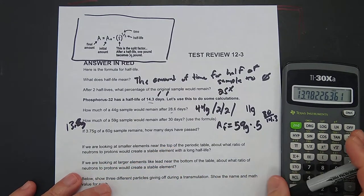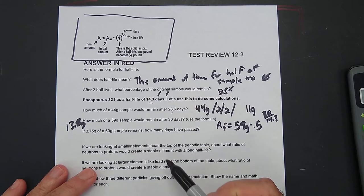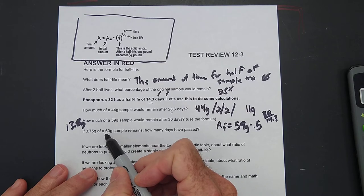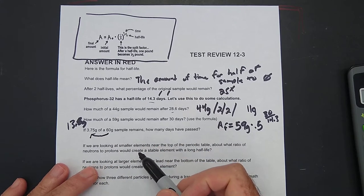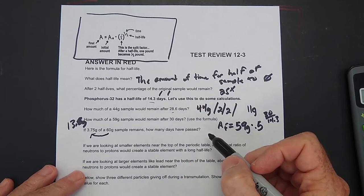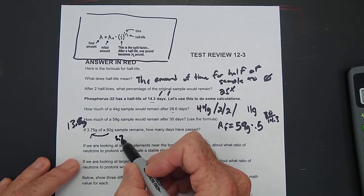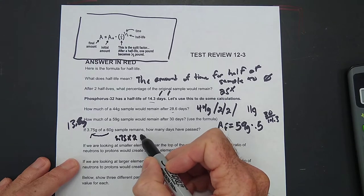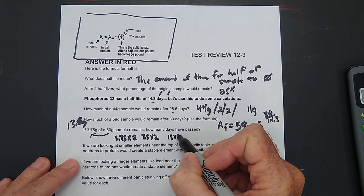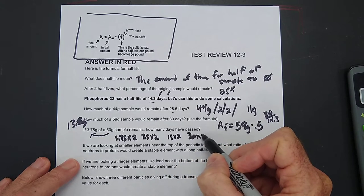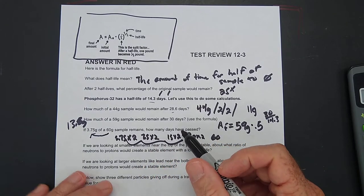If 3.75 grams of a 60-gram sample remains, how many days have passed? All right. So what we need to do is figure out how many half-lives it took from 60 to 3.75. So first I'm going to ask you what the answer is right now, and now I'm going to show you how to work it. 3.75 times 2 would be 7.5, times 2 would be 15, times 2 would be 30, times 2 would be 60. So 1, 2, 3, 4 half-lives.